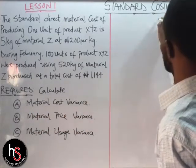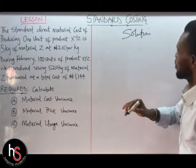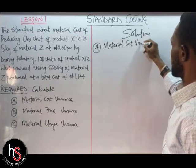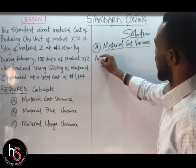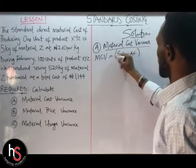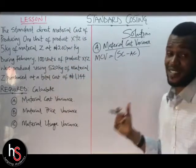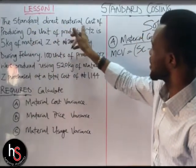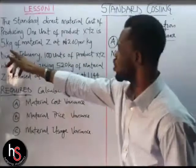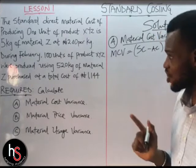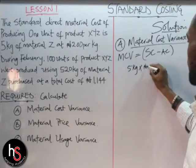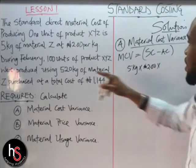So, solution. Number 1: Material Cost Variance. MCV equals the standard cost minus the actual cost. The standard direct material cost of producing one unit of product XYZ is 5 kg of material at 2 Naira per kg. So we multiply 5 kg times 2 Naira per kg, then times 100 units produced during February.